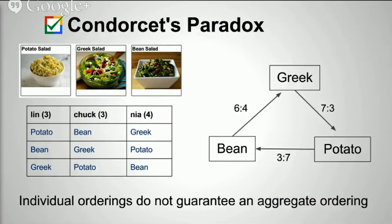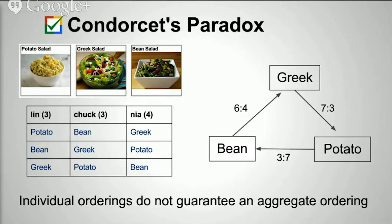Let's look at another example with only three users voting on three options. Looking at bean salad versus Greek salad: Lin prefers bean, Chuck prefers bean, Nia prefers Greek — bean beats Greek 6 to 4. However, Greek beats potato, and potato salad beats bean salad. So we have a cycle — there is no Condorcet winner for this specific example. That's known as Condorcet's paradox.